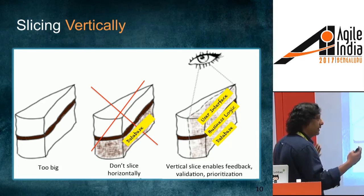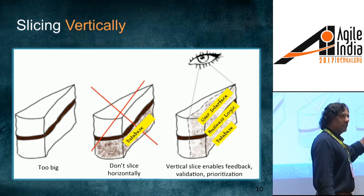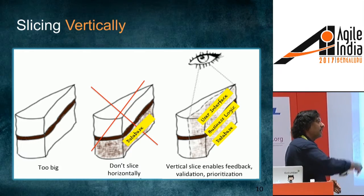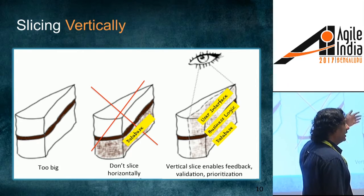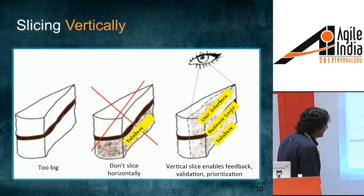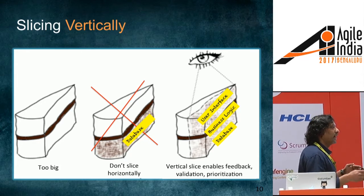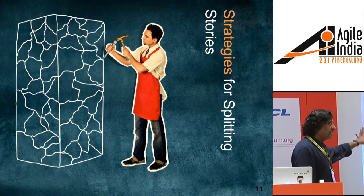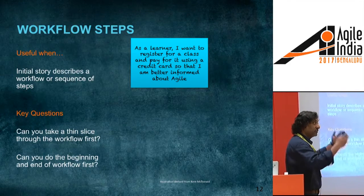We want to eliminate that silo mentality and minimize handoffs. The right way to approach splitting — if we are doing horizontal slices by architecture layer — is to look at it from a cross-cutting perspective, taking all layers of your slice. If it's a traditional three-tier app — user interface, business layer, database — you want some thin sliver through all of them. That should be our first goal.